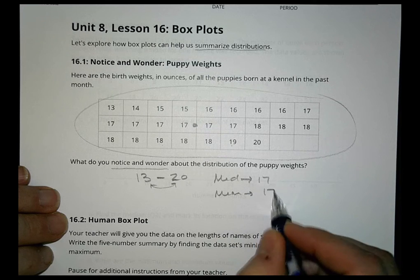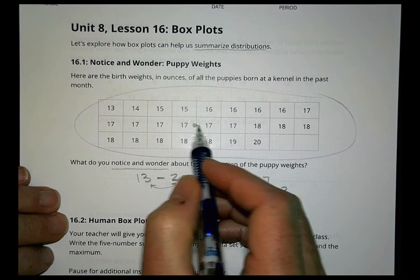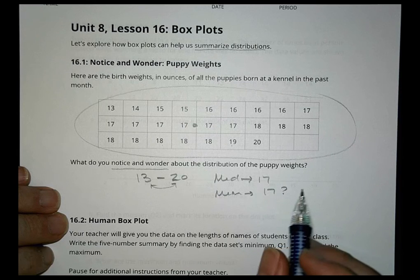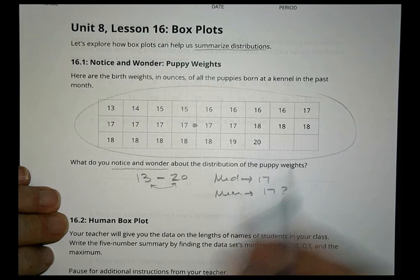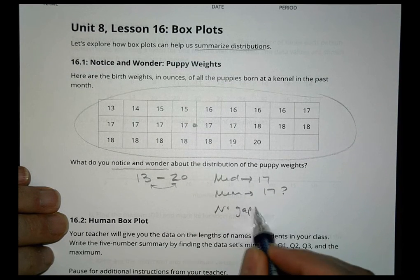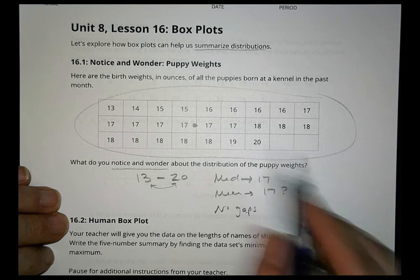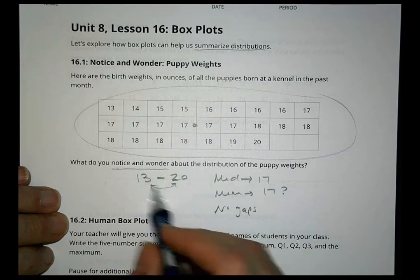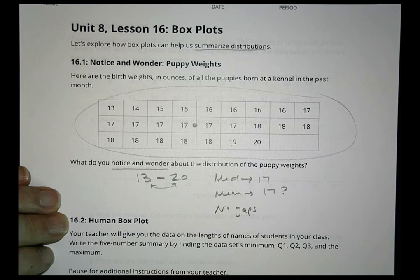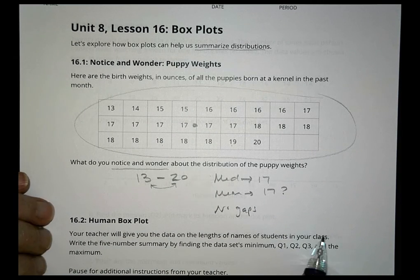The mean probably isn't much different. The mean is probably also maybe about 17 because the values aren't too far from that center point there. We also see that there are no gaps in the data. It goes all the way from 13 to 20 with no gaps there. And basically the numbers are fairly close together.